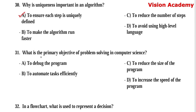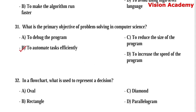Question number 31: What is the primary objective of problem solving in computer science? Option A, to debug the program. Option B, to automate tasks efficiently. Option C, to reduce the size of the program. Option D, to increase the speed of the program. Here, option B, to automate tasks efficiently, is the right answer.